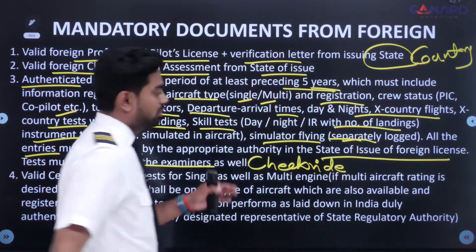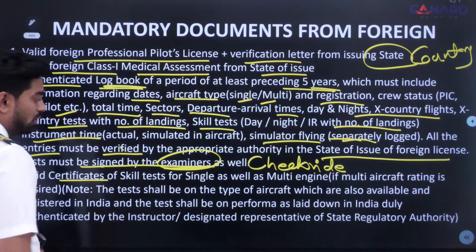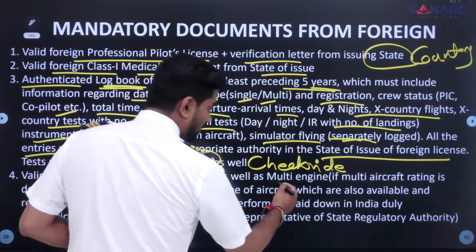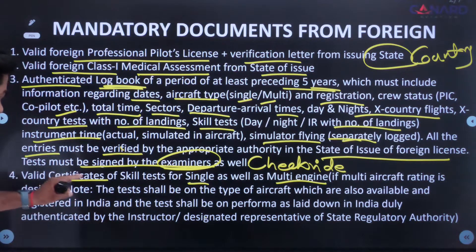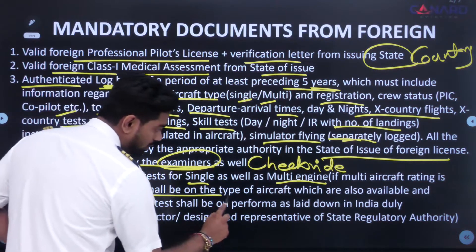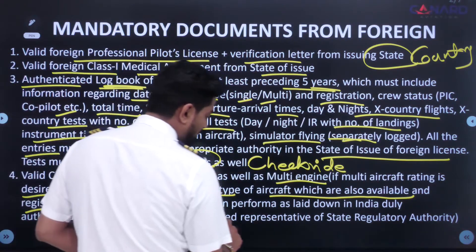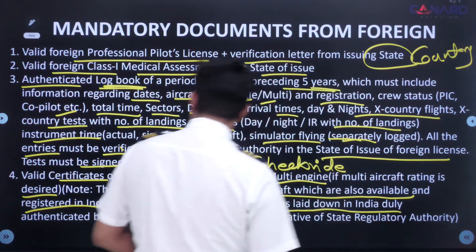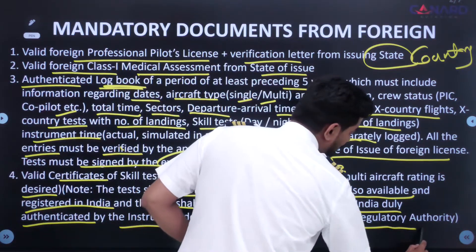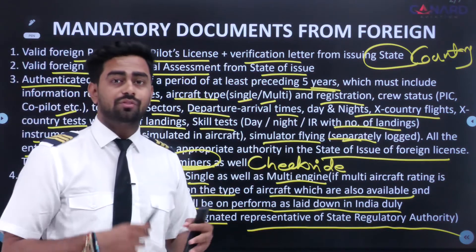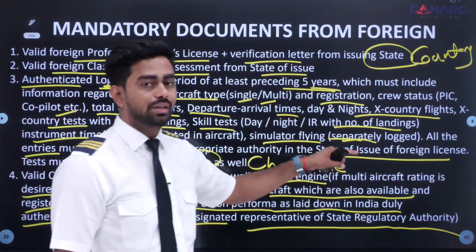Fourth is valid certificates of skill tests for single as well as multi-engine, if a multi-aircraft rating is desired. Important note: the test shall be on the type of aircraft which are also available and registered in India, and the test shall be performed as laid down in India, duly authenticated by the instructor or designated representative of the state regulatory authority. Make sure the aircraft types from your foreign flight school are also available in India for your future checks.